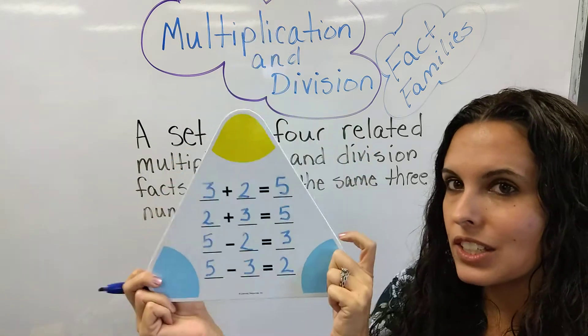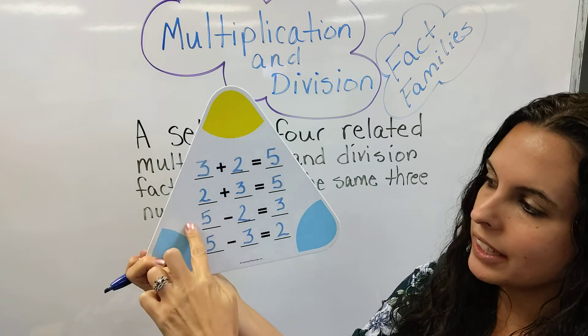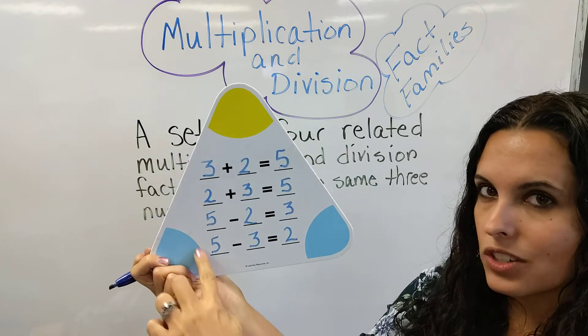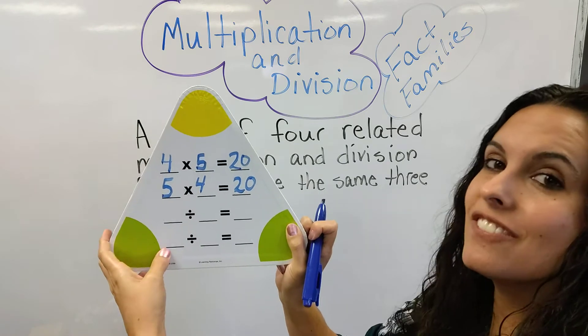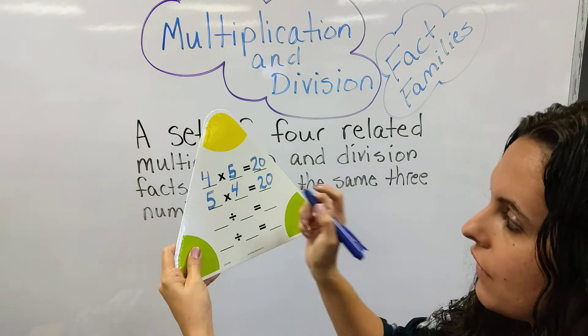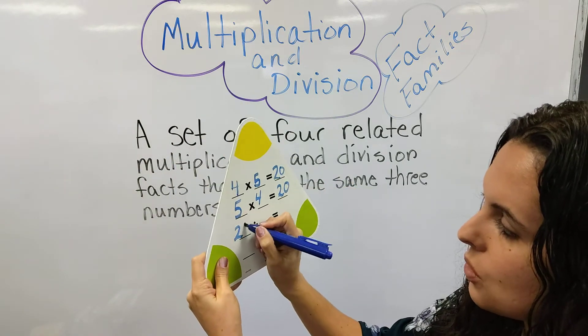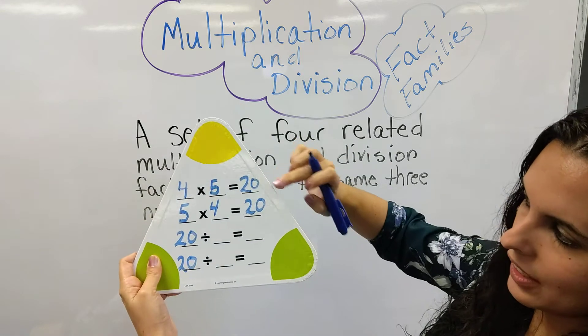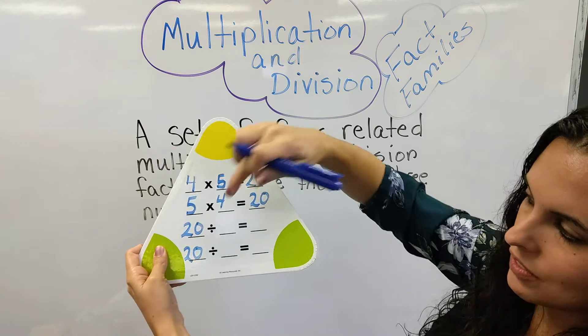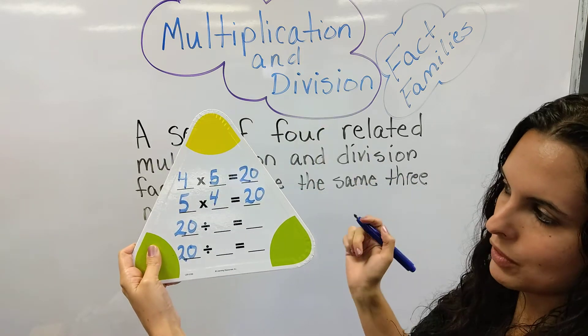Now remember when we did addition and subtraction, your big number for subtraction is up front. So your big number for division is up front. So now your 20 is going to go up front. So here it's your answer for multiplication. For division, it's the first number for both.